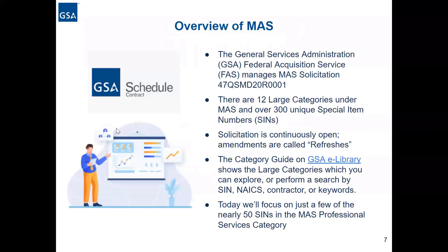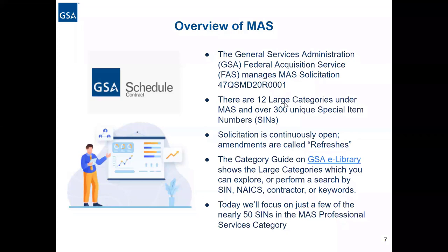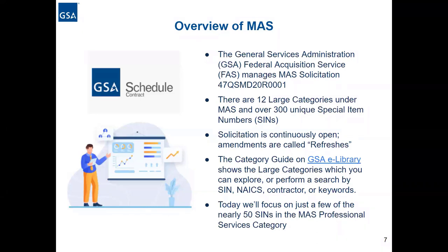The Multiple Award Schedule is one of the most unique vehicles in the contracting universe in the federal government. It is managed by the General Services Administration. GSA used to have numerous schedules for a variety of commercial products and services. As of 2019, we had 24 different schedules, including the professional services schedule. In 2019, GSA consolidated all of those 24 schedules into just one schedule called the Multiple Award Schedule.